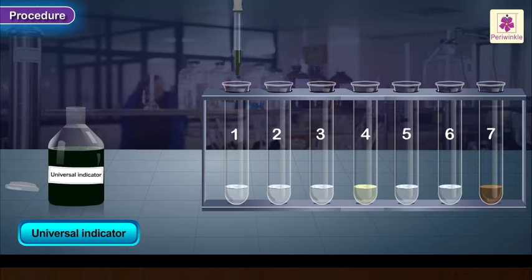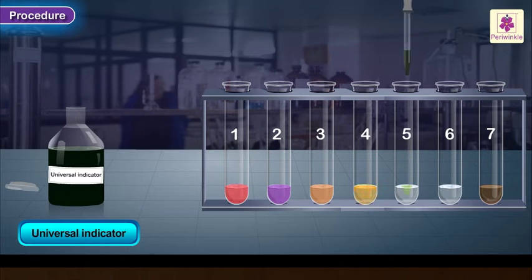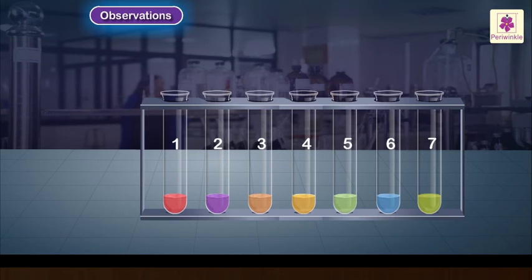Add one drop of universal indicator to each test tube. Observe and record the changes in the color of the contents of each test tube. Match the color obtained with that of the color chart to obtain the pH value of each test solution, and record the pH value observations.